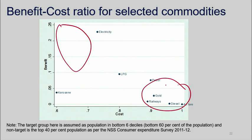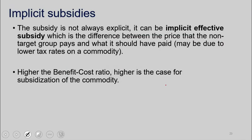So essentially, you want to provide subsidies to items where the benefit-cost ratio is high, and you don't want to provide subsidies to items where it's low. The subsidy is not always explicit. When you give money to someone, that's a subsidy. But you can also have an implicit subsidy — for example, you're supposed to pay a certain tax but you're not charged that tax. Your benchmark could be the cost, or it could be the normal tax rate that you have to pay. The higher the benefit-cost ratio, the greater is the case for subsidization of the commodity.